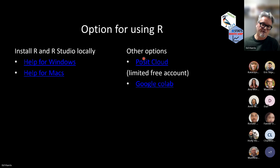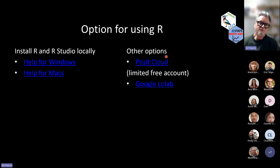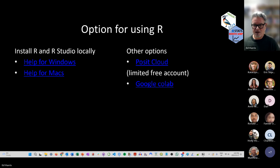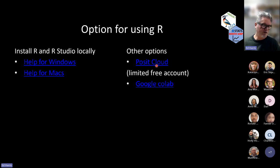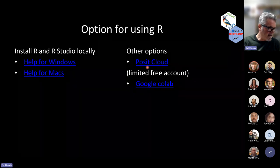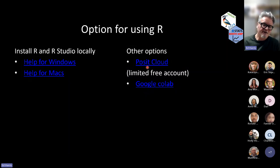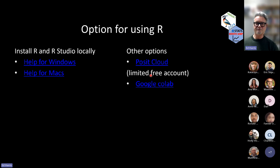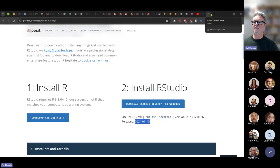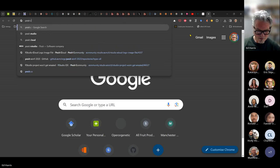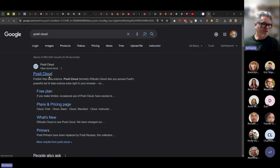You do have other options for using R where you don't have to install a local version. One option is Posit Cloud — formerly RStudio Cloud — which has a free account. You can sign up with any email and they give you a limited number of hours per week. This works just like any other cloud service.